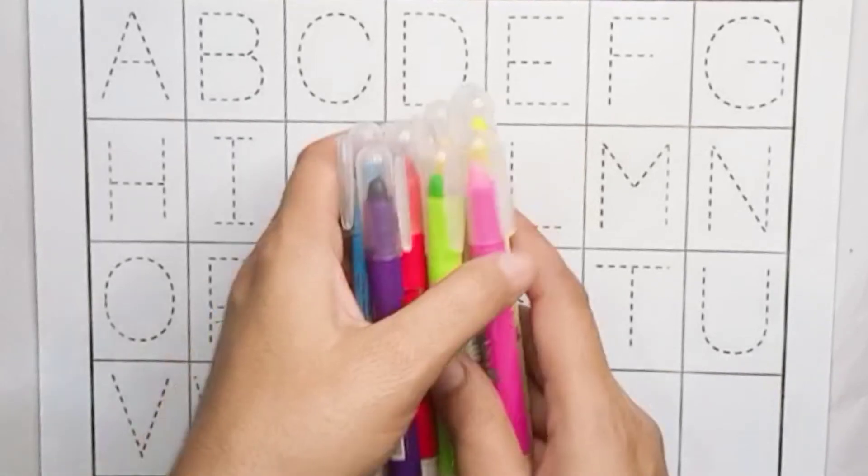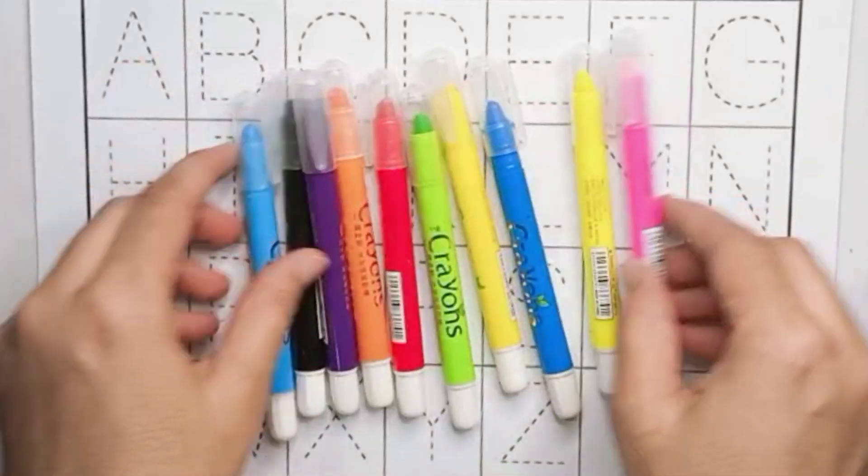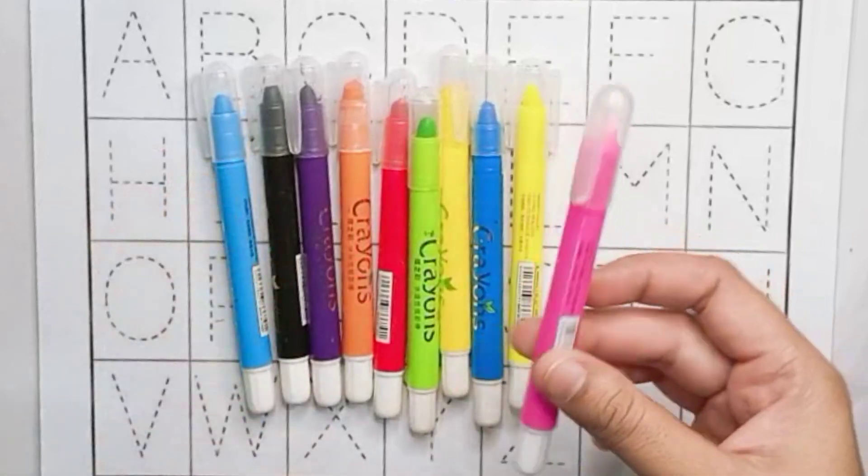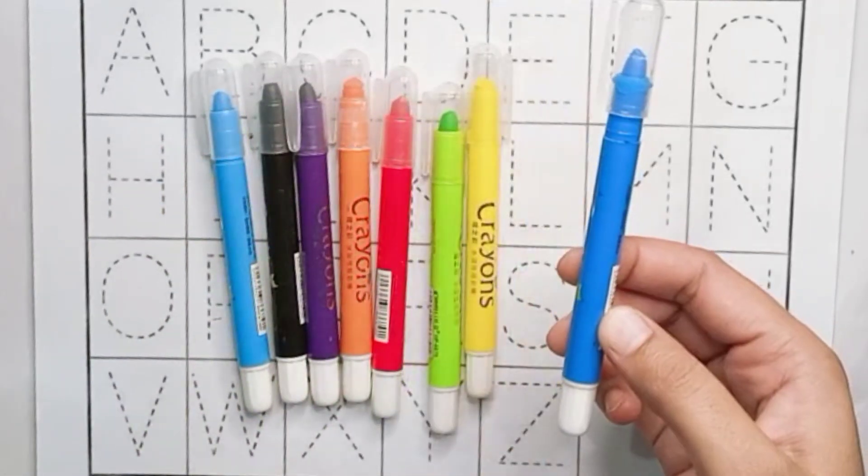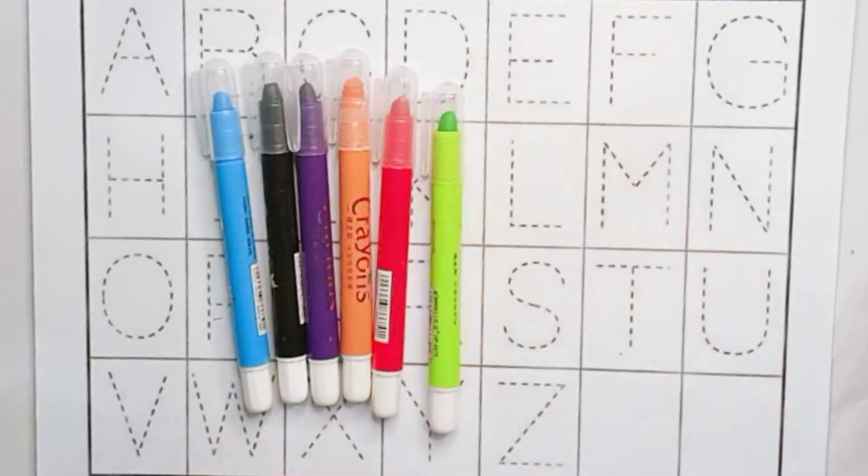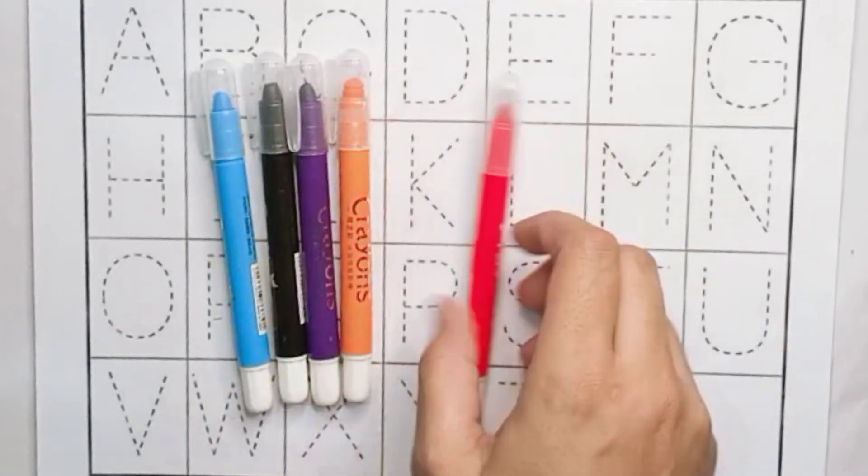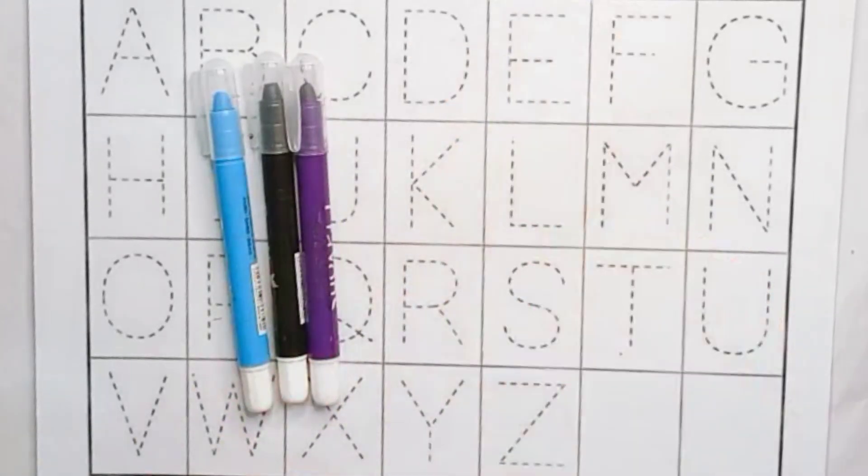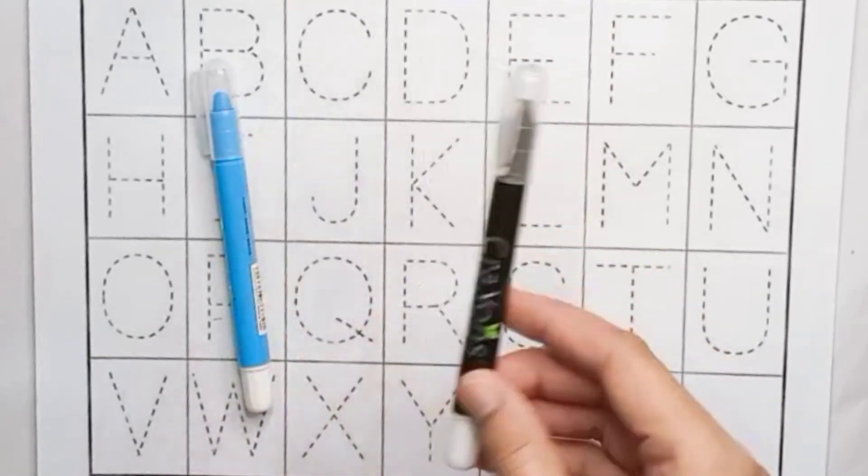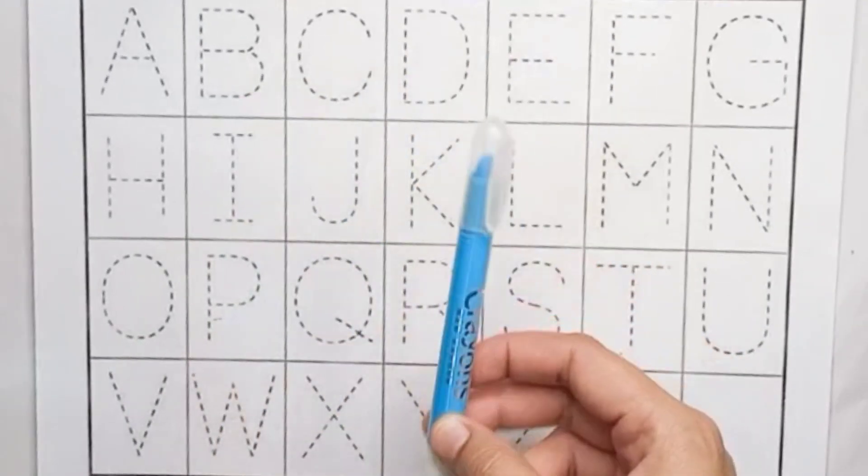So we have some colors. Learn colors name. This is pink color, blue color, yellow color, parrot green color, red color, orange color, violet color, black color, and sky blue color.